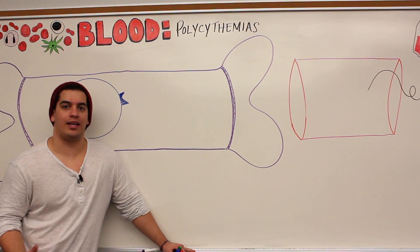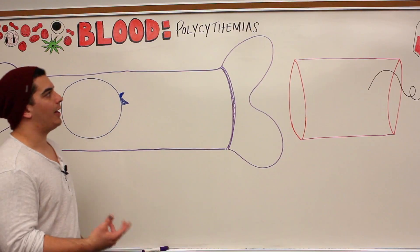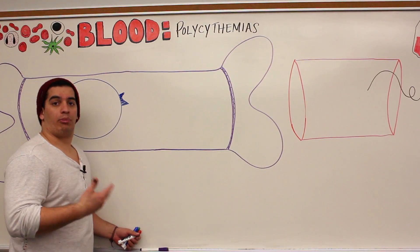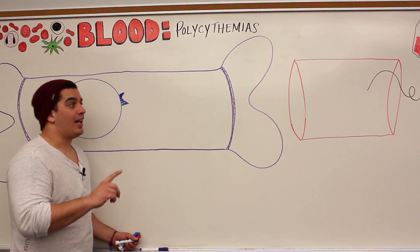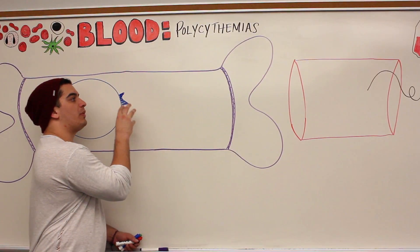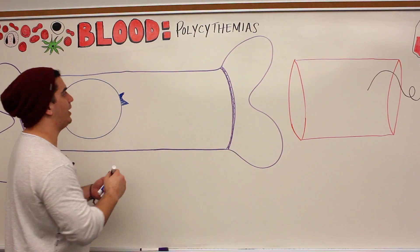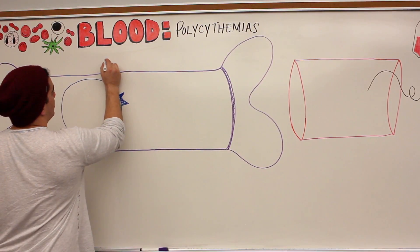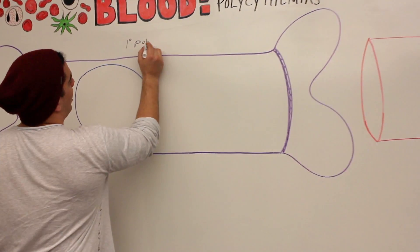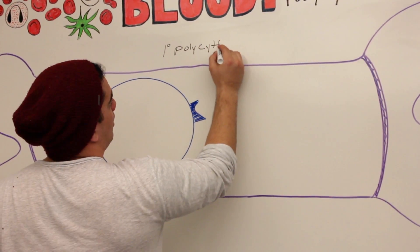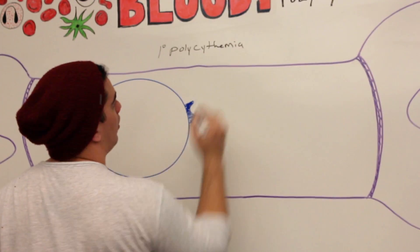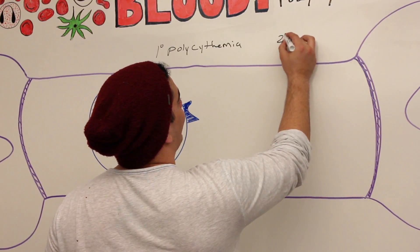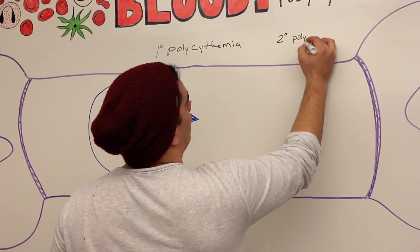Alright Ninja Nerds, in this video we're going to talk about polycythemia. There are two types I want to talk about mainly: polycythemia vera, or primary polycythemia, which is the first one we're going to talk about — occurring usually within the bone marrow — and the other one is going to be secondary polycythemia.